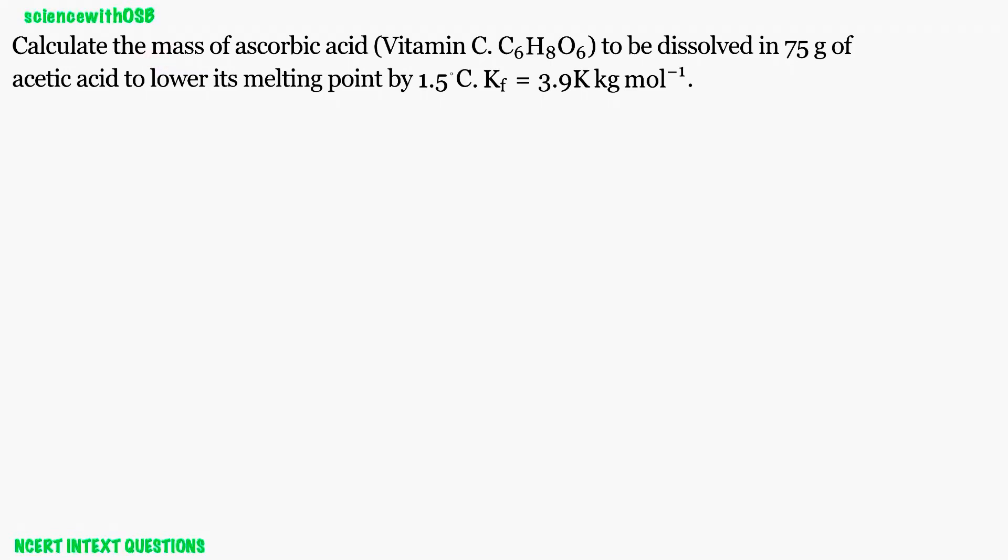Calculate the mass of ascorbic acid to be dissolved in 75 grams of acetic acid to lower its melting point by 1.5 degrees Celsius. Kf value is given as 3.9. This is a straightforward depression of freezing point question.